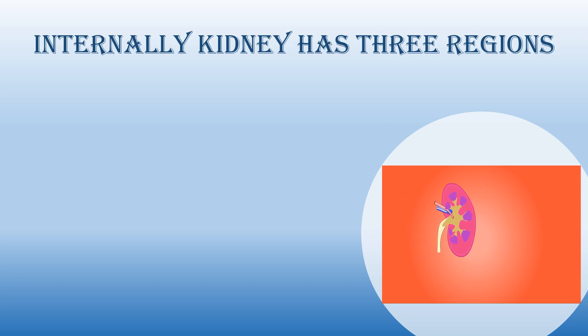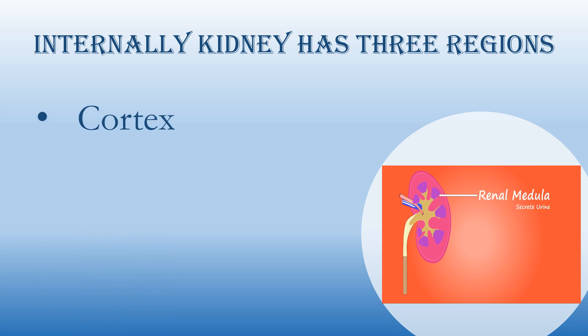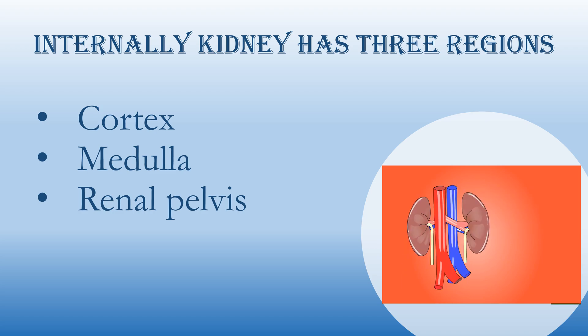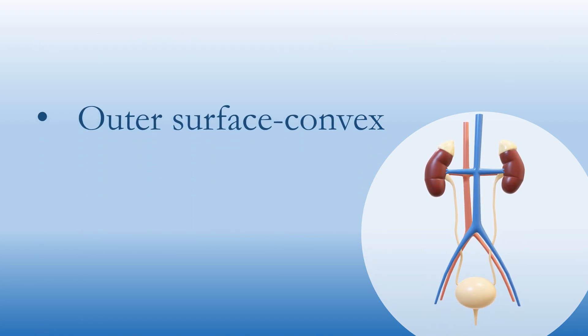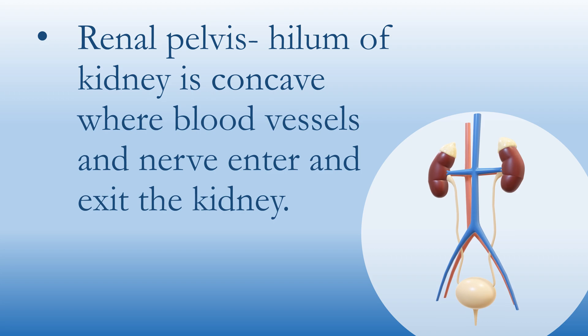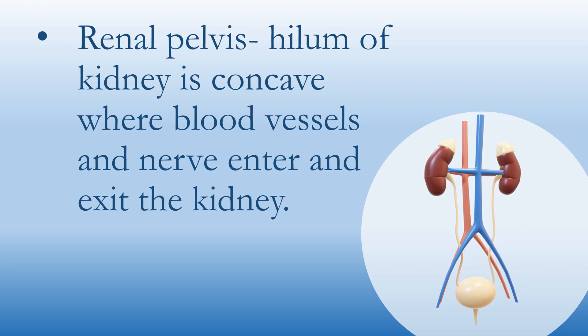Internally, the kidney has three regions: the cortex, medulla, and renal pelvis. The outer surface of the kidney is convex while the inner surface is concave. The renal pelvis is in the region called the hilum of the kidney, which is concave, where blood vessels and tubes enter and exit the kidney.